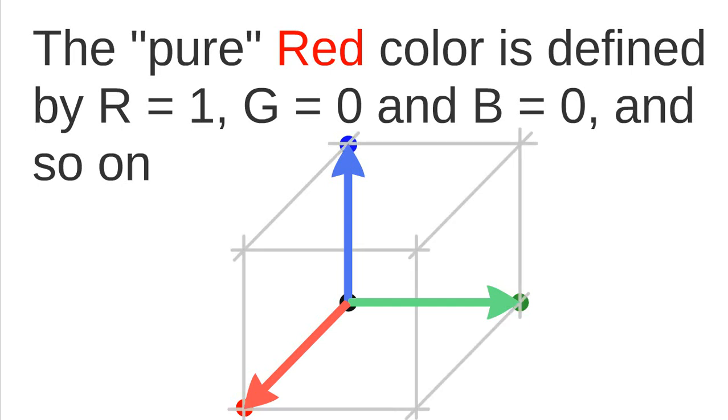We can also define the other corners of this coordinate system from 0 to 1 in all three axes. So we can have, for example, combinations of both colors. For example, if we combine blue and green, we will have the cyan color.